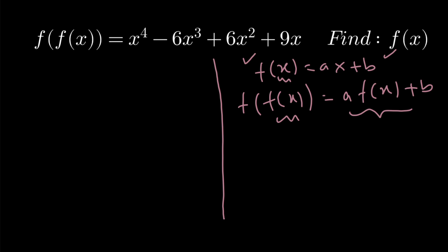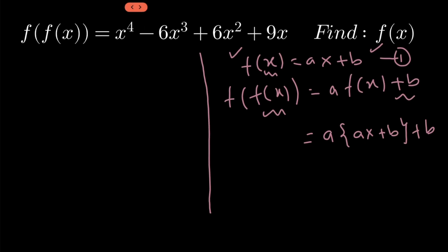This right-hand side can be simplified further because from the first equation we have the value of f of x as ax plus b. So a is multiplied with ax plus b, and plus b outside as it is. Simplifying gives a²x plus ab plus b, which is the value of f of f of x.